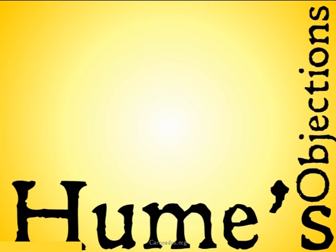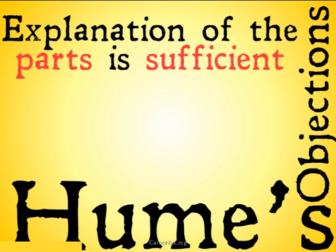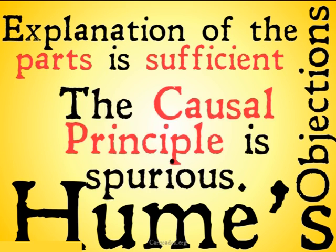Hume's objections are: first, that explanation of the parts is sufficient — basically, explaining all of the individual parts of the world means we don't have to explain the whole universe. Second, Hume is going to say that the causal principle — that everything needs a cause or an explanation — is spurious, dubious, questionable, and something we might not want in our ontology.